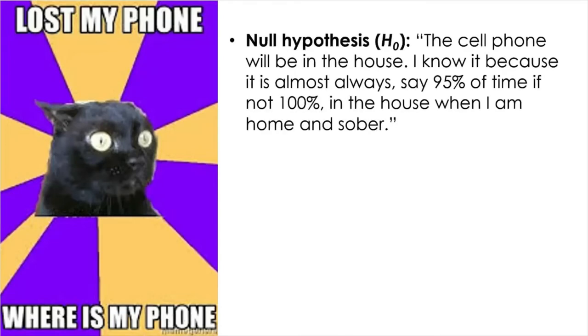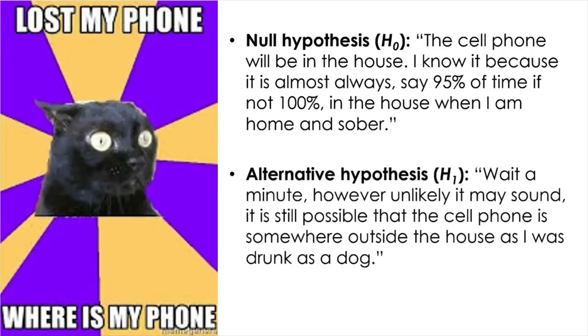To find my phone, I use my wife's phone to infer the location of mine. I hear faint ringing telling me it is somewhere outside the house. In this story, my null is that the cell phone will be in the house — that is my default position, assuming nothing happened. I know it's in the house because it is almost always, say 95% of the time, if not 100%, in the house when I'm home and sober. However unlikely it may sound, it is still possible that the cell phone is somewhere outside the house because I was drunk. So that is your alternative hypothesis.